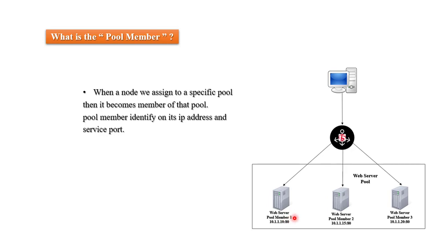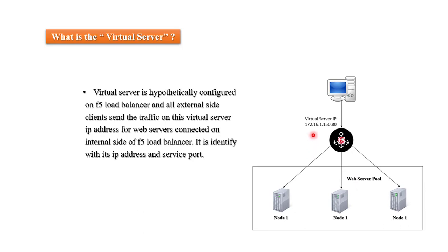What is the virtual server? A virtual server is hypothetically configured on an F5 load balancer. Clients connected on the external side send requests to the virtual server's IP address to access services or applications running on the server devices. The virtual server is identified by its IP address and service port — for example, IP address 172.16.1.150 on port 80.